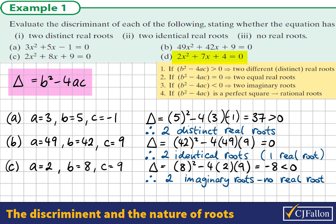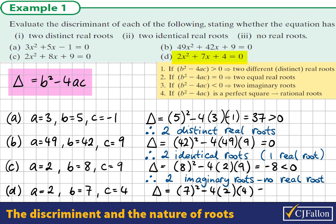In part d, we have 2x squared plus 7x plus 4 is equal to 0. So this time, a is equal to 2, b is 7, and c is 4. The discriminant will be 7 squared minus 4 times 2 by 4. When we evaluate this, we get the answer 17.